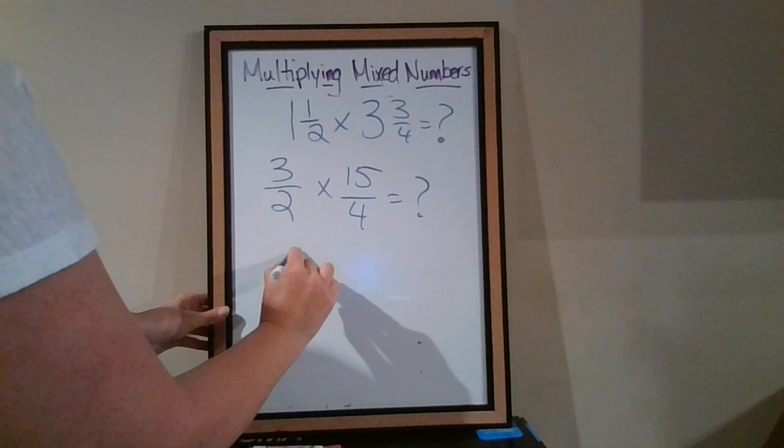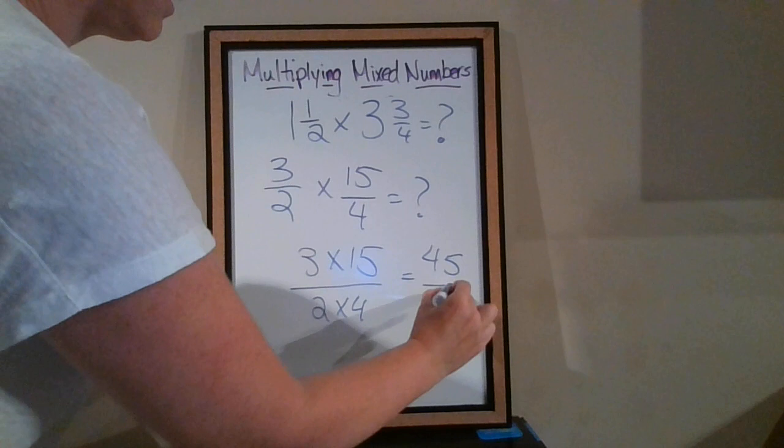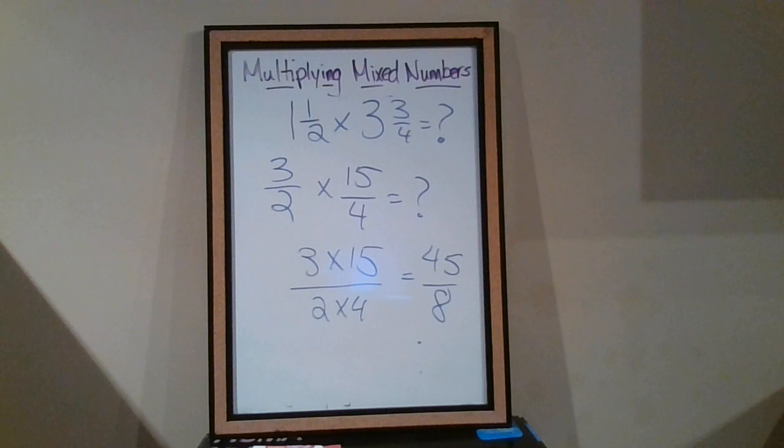Now what we need to do is multiply. So we multiply our numerators. 3 times 15 is 45. And 2 times 4 is 8. So now I'm left with 45 over 8.